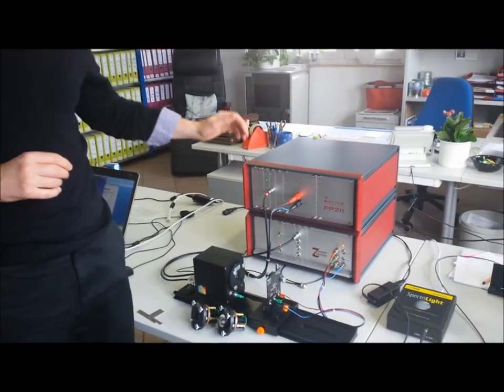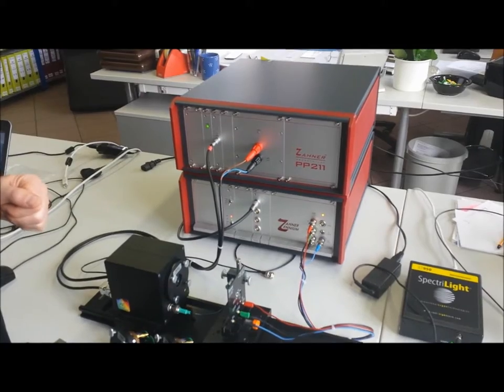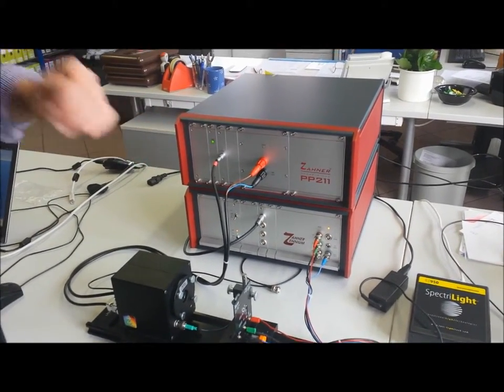First, let's look at the system. It's a CIMPS2 system because it has the Xenium potentiostat as opposed to the IM6 system, and it's the 2 system because we're using the PP211.